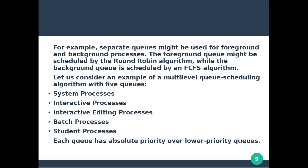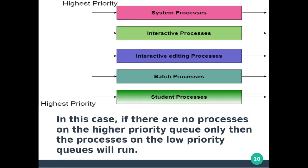The five process types are: system, interactive, interactive editing, batch processing, and student processing. Each queue has absolute priority over lower priority queues. The arrangement from highest to lowest priority is: system processes, interactive processes, interactive editing processes, batch processes, and student processes — each shown in different colors.